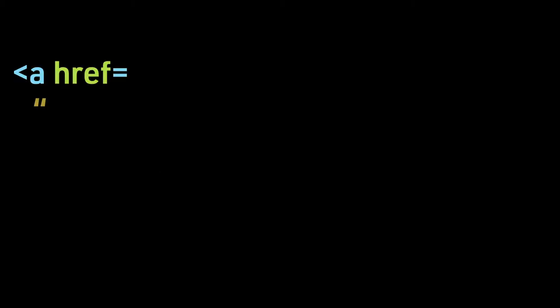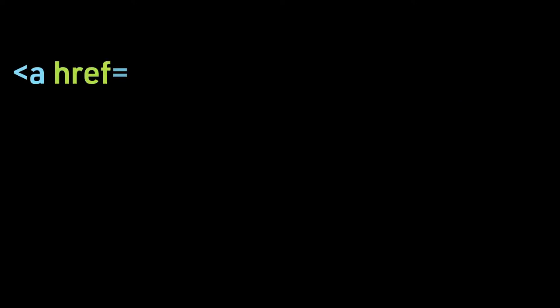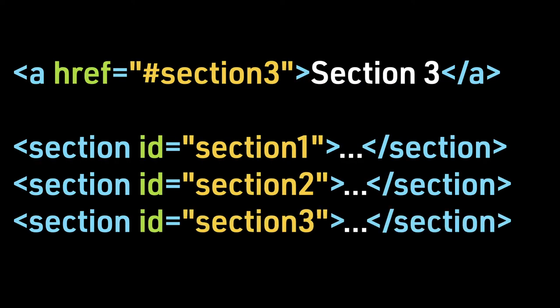The Weekly Code Quiz. If we wanted to create a link from one section of a web page to another, how would we write that out? In this example, we have three sections, each with a unique ID attribute, so when the link is clicked, the viewer will be jumped to the content marked as Section 3.